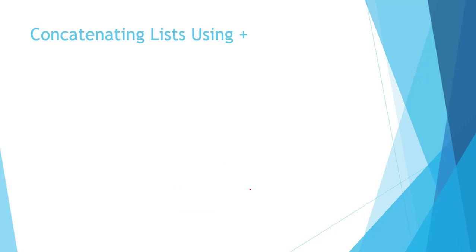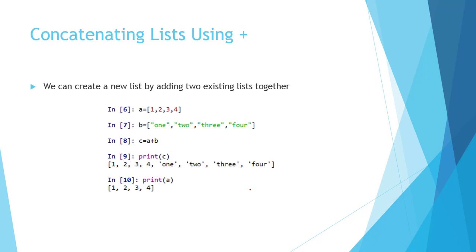Next is concatenating lists using the plus operator. We can create a new list by adding two lists using the concatenate operator. We have two lists, a and b. c = a + b — the concatenate operator adds the elements of both lists and returns a new list. The original lists a and b remain unchanged and we have generated the new list using concatenation.